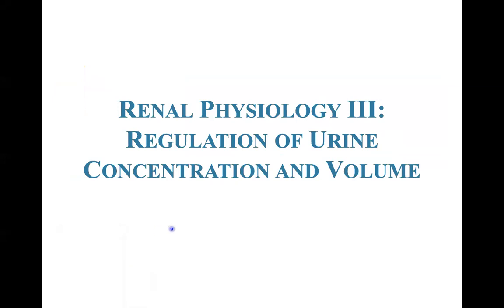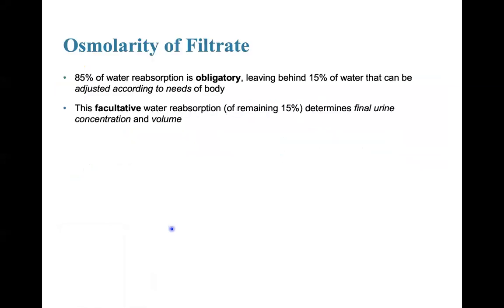This is the fourth recording for the urinary system and we're going to talk about regulation of urine concentration and volume. 85% of water reabsorption is obligatory, leaving behind 15% of water that can be adjusted according to the body's needs. Obligatory means it has to be reabsorbed back; this facultative water reabsorption of the remaining 15% determines the final urine concentration and volume.